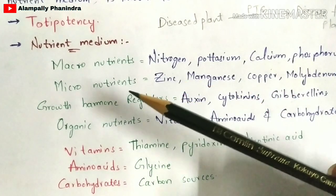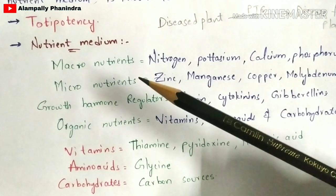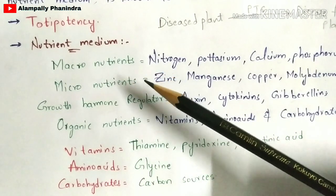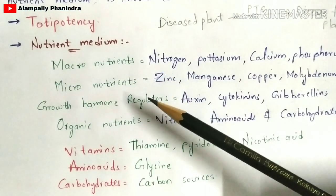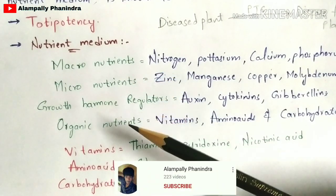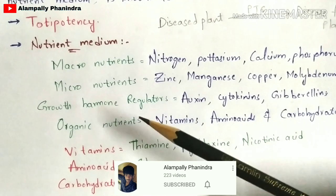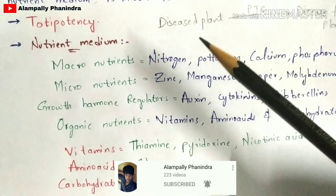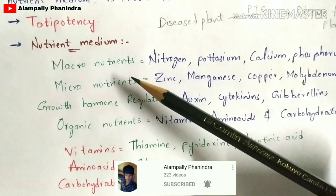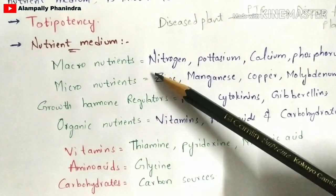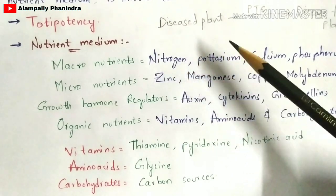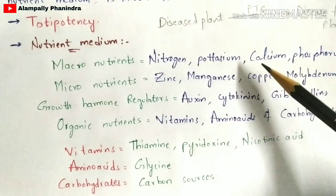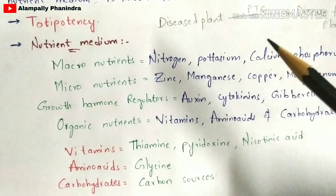The major nutrients present in the MS medium are: macronutrients, micronutrients, growth hormone regulators, and organic nutrients. Macronutrients include nitrogen, potassium, calcium, and phosphorus, each playing a different role. Micronutrients include zinc, manganese, copper, molybdenum, and iron, which also each play different roles.